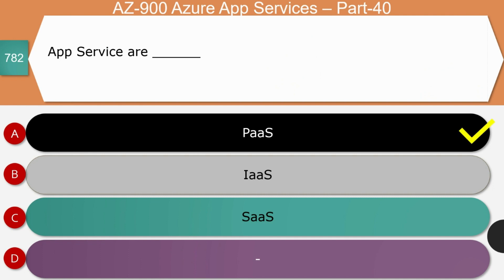Next question — App Service is a PaaS, yes or SaaS? The right answer is Platform as a Service. It is a platform as a service that provides a complete platform for developing, running, and managing applications. Microsoft takes care of all the underlying infrastructure so you can focus on building and deploying your application. App Service is a perfect example of Platform as a Service.